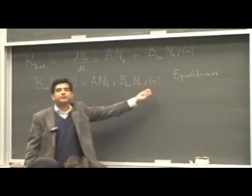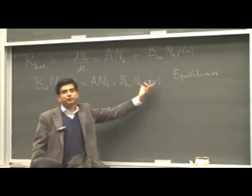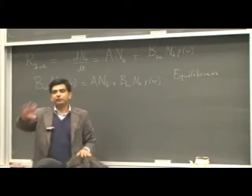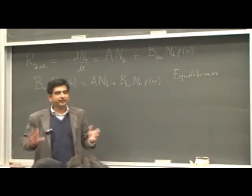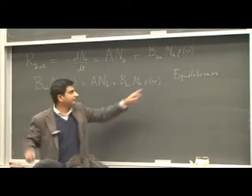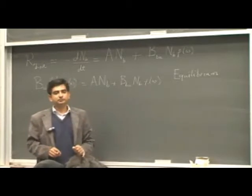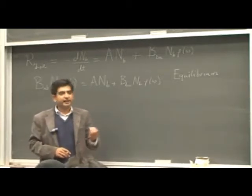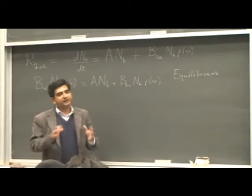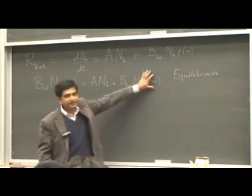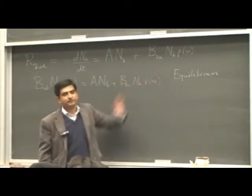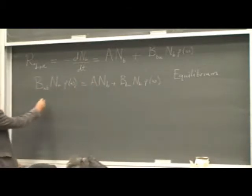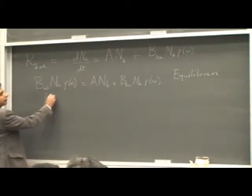The energy density of photons is simply the energy of photons per unit volume at frequency omega. You count the number of photons in the field that have frequency omega, multiply them with the energy of each photon, h-bar omega, and divide by the volume. So this is what this term means — the energy density. Now you've equated the two terms and can solve for rho omega.